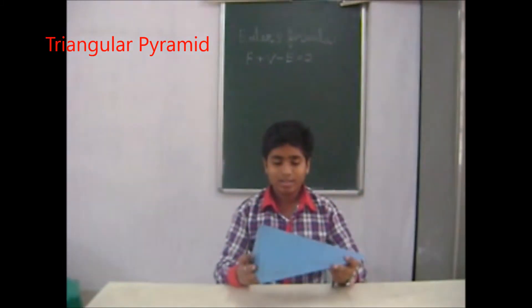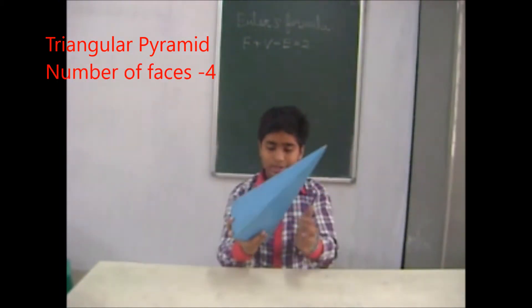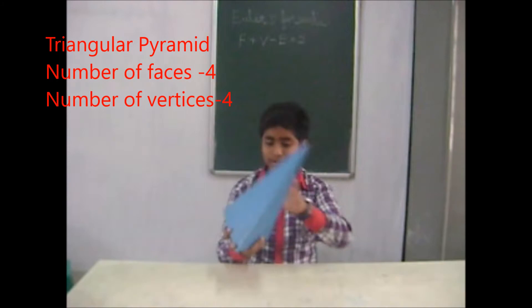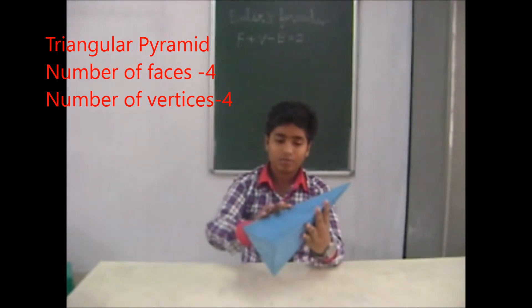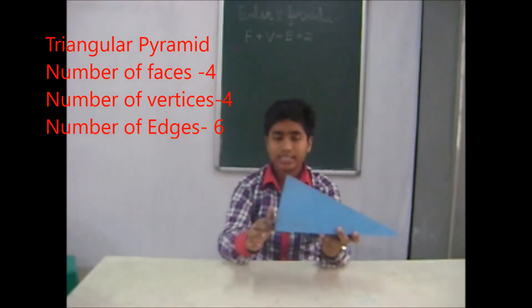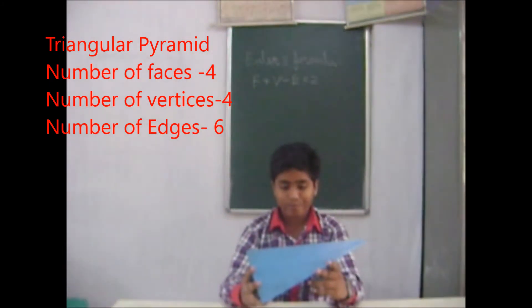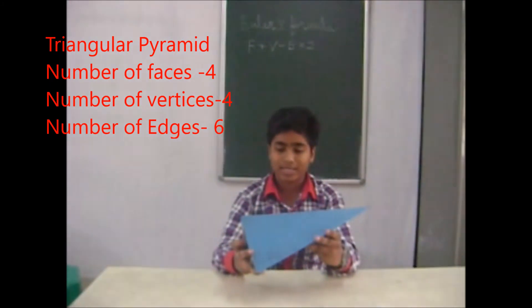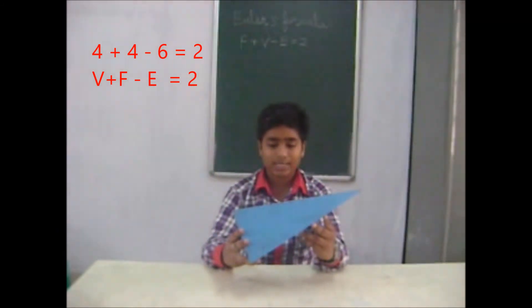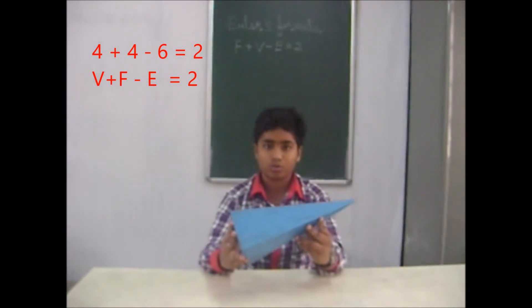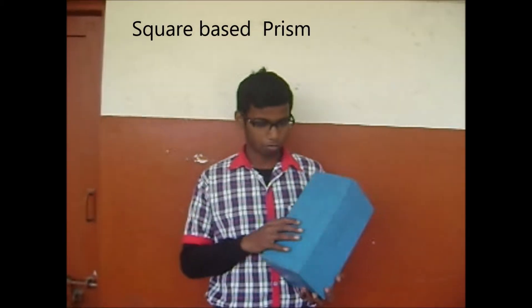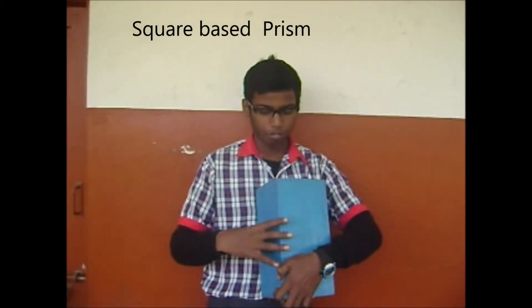For the triangular pyramid: the number of faces is 4 — 1, 2, 3, 4. Number of vertices is 4 — 1, 2, 3, 4. Number of edges is 6 — 1 through 6. By Euler's formula, F plus V minus E equals 2. So 4 plus 4 minus 6 equals 2. Verified.